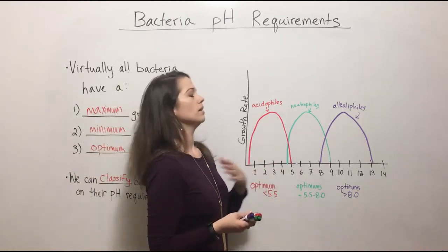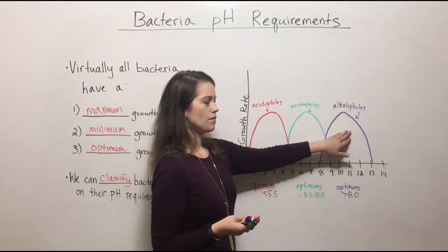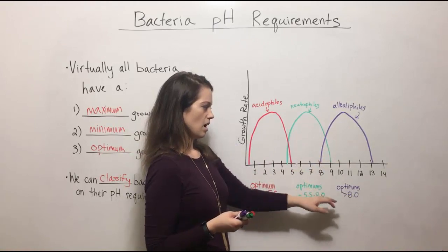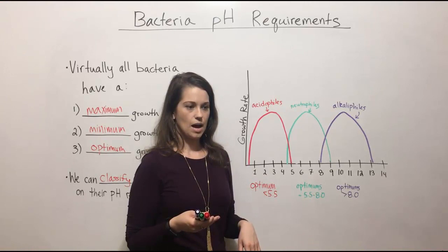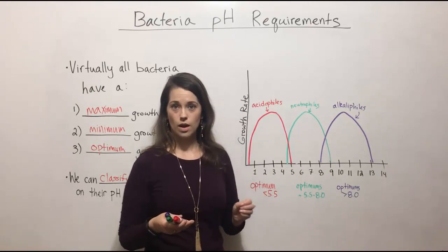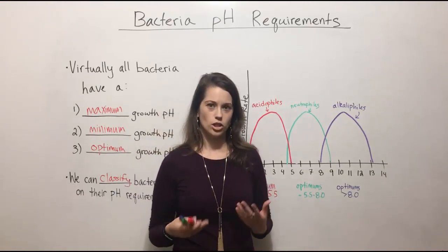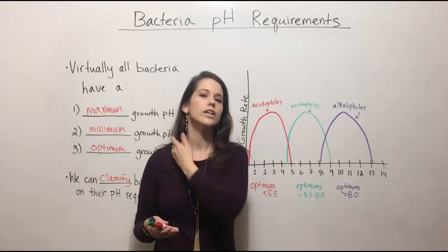An example of an alkalophile, something that's got an optimum growth pH of 8 or greater is Vibrio cholerae, which causes cholera. And that's why cholera has such a high infectious dose.